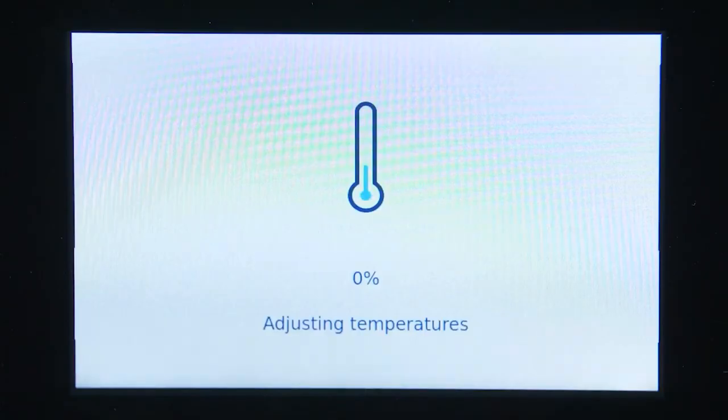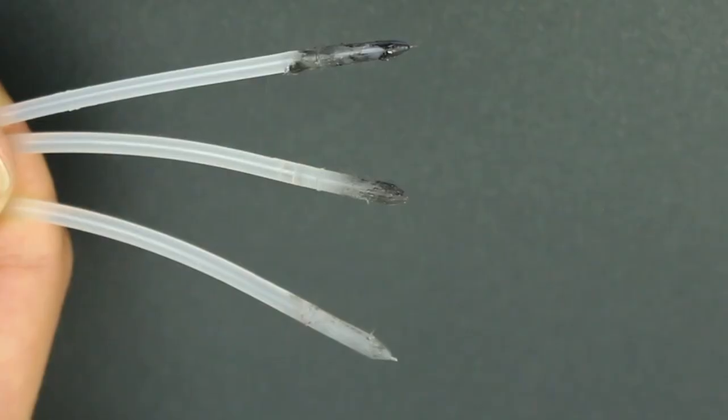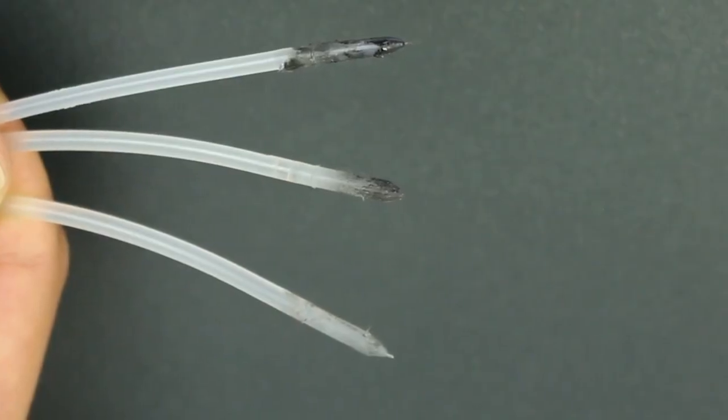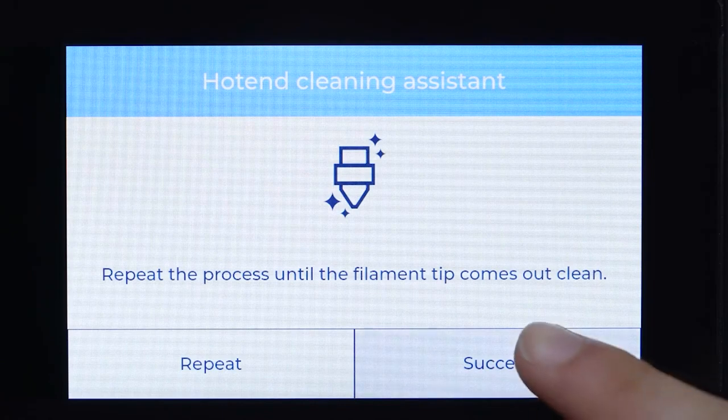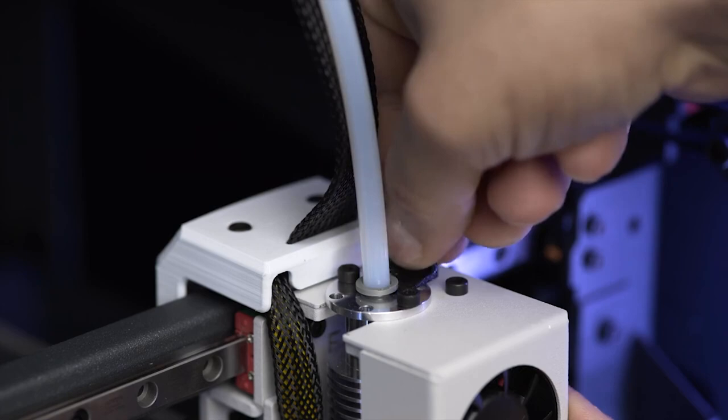Repeat the process until the end of the filament comes out clean. Once you have finished, reinstall the Bowden tube and coupling clip.